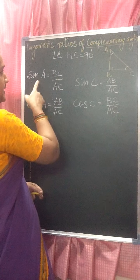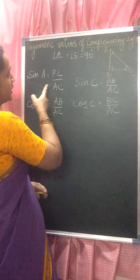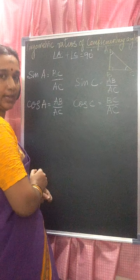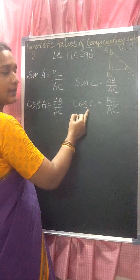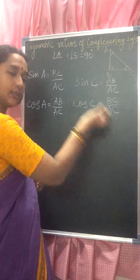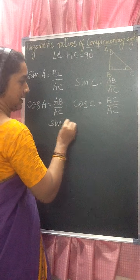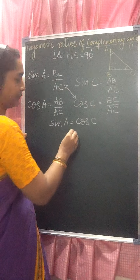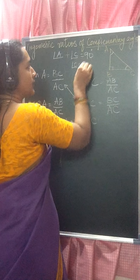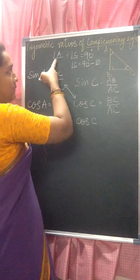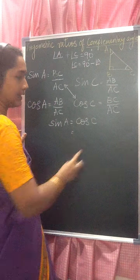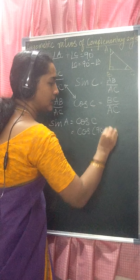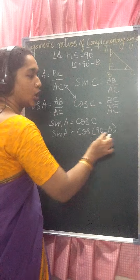So when you see these four ratios — sine A, sine C, cos A, cos C — look at the right-hand sides. For sine A and cos C, both equal BC/AC, so these two are equal. That is, sine A is equal to cos C. Now this angle C you can write as 90 minus angle A, since A plus C equals 90 degrees. So sine A is equal to cos(90 minus A).